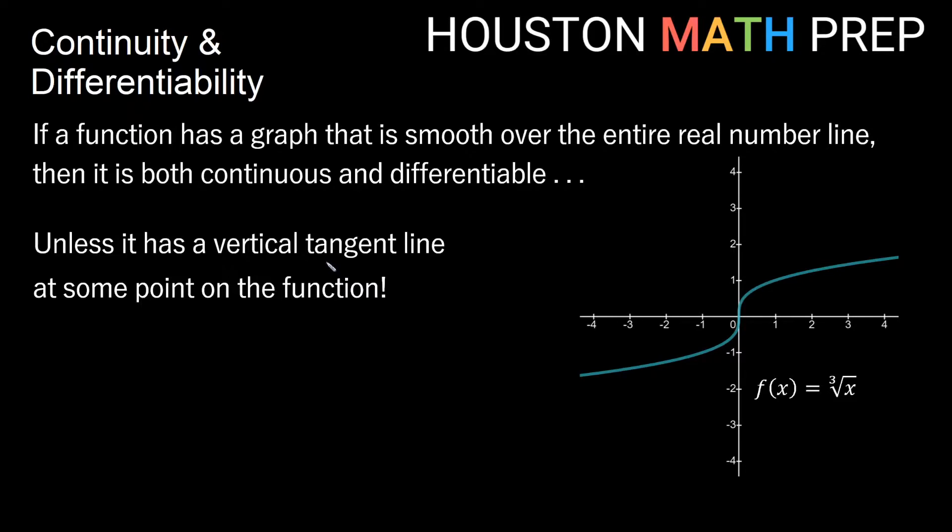Now we got to add a huge beware here. If our function is smooth over the entire real number line, it's both continuous and differentiable unless we have a case where we have a vertical tangent line at some point on the function.